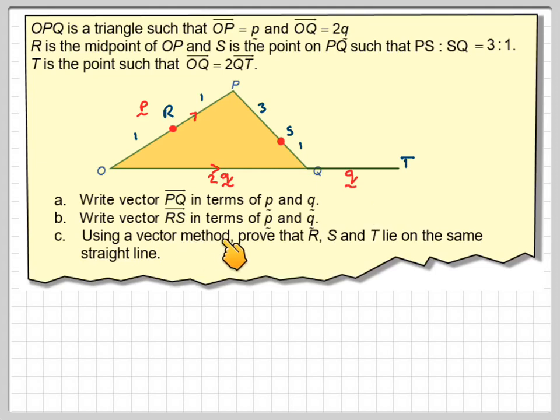Right, write down the vector PQ in terms of p and q. So PQ will be, now, to go from P to Q, we want to go from there to there, but the route that we need to go is PO plus OQ.